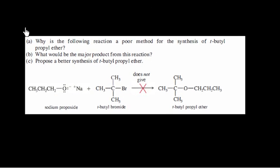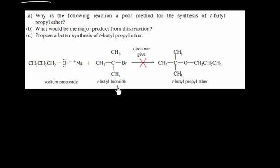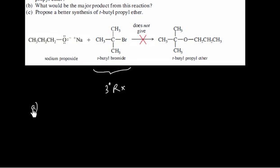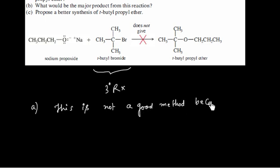Now let us consider this problem: why is the following reaction a poor method for synthesis of tert-butyl propyl ether? The reaction involves reacting a propoxide with tert-butyl bromide to give tert-butyl propyl ether. This is not a good method because the alkyl halide is tertiary — on a tertiary alkyl halide we will have mainly elimination rather than substitution.